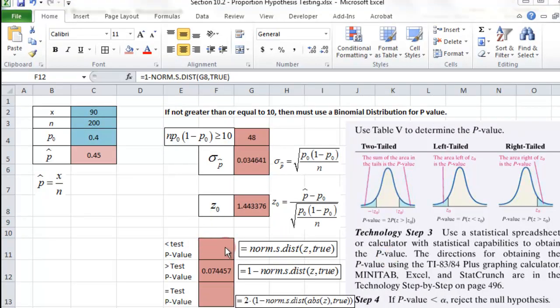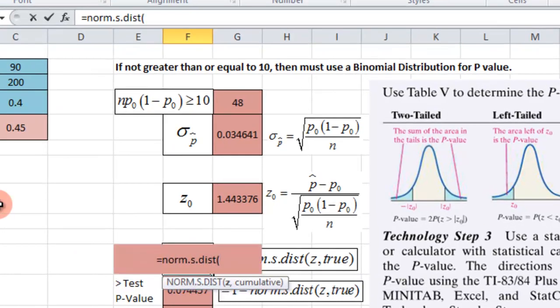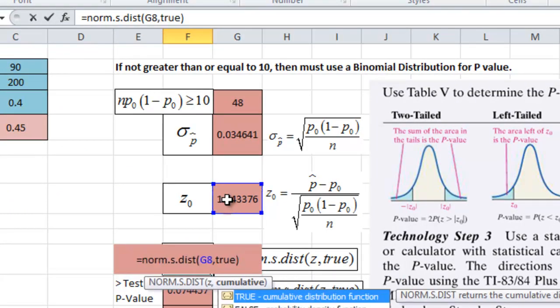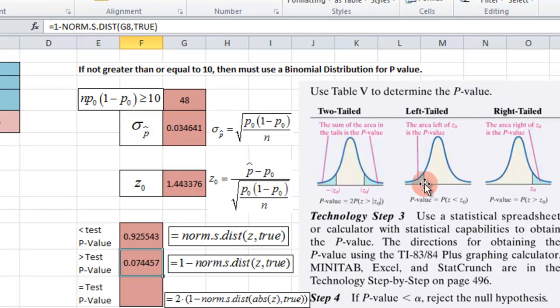Now I'm going to finish filling out these two values in case we want to do a different value for z. For example, if our z value was a left tailed test, all I have to do is just put equals, and then norm.s.dist, and then put our z value in comma and true. Because that's going to find the area to the left. So of course, this probably will be a negative z value. That's showing 92% to the left of here, whereas the 7.5% is that way.